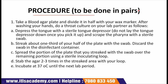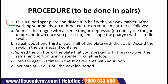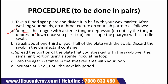Next comes procedure, to be done in pairs. First point: take a blood agar plate and divide it in half with your wax marker. After washing your hands, do a throat culture on your lab partner as follows. Point A: depress the tongue with a sterile tongue depressor. Do not lay the tongue depressor down once you pick it up, and scrape the pharynx with a sterile swab.